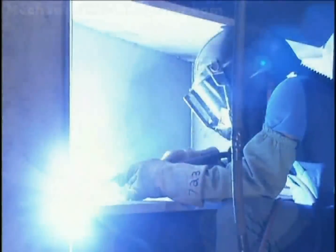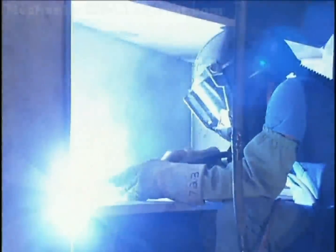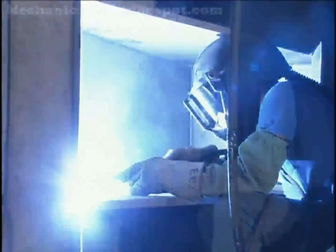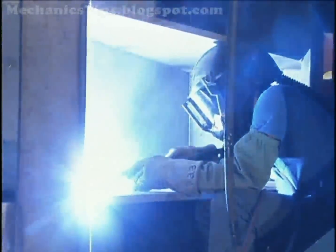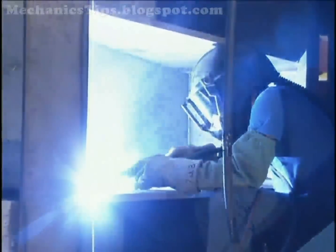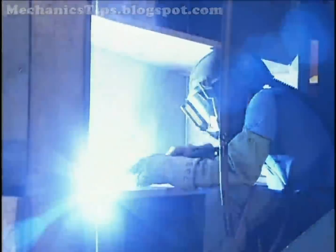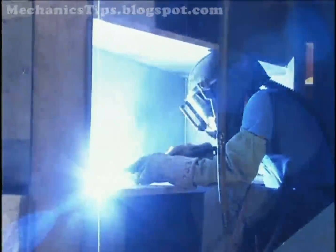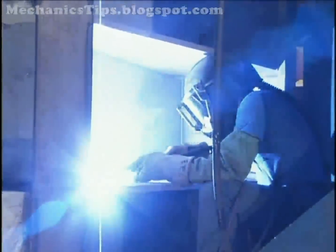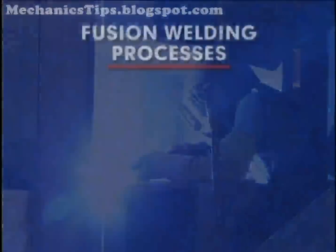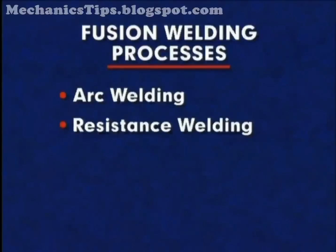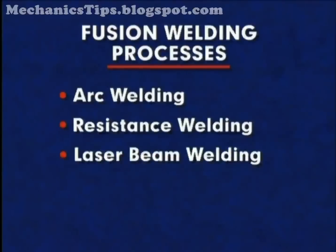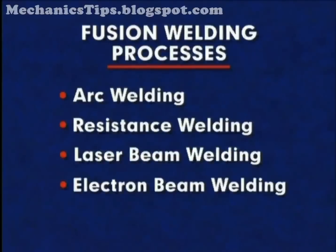In fusion welding, metal coalescence is created by melting a base metal and filler metal together, or by melting the base metal alone. The principal fusion welding processes are arc welding, resistance welding, laser beam welding, and electron beam welding.